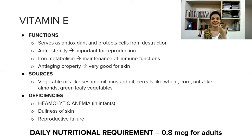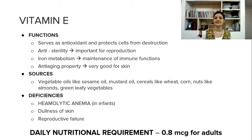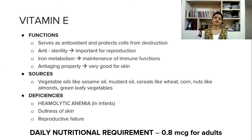Sources of vitamin E: mainly vegetable oils like sesame oil and mustard oil; cereals like wheat and corn; nuts like almonds; and green leafy vegetables. Deficiency causes hemolytic anemia — there is an abnormal breakdown of red blood cells, causing anemia. As it works on the skin, there is also dullness of skin. As it works on reproduction, failure in reproduction is also a deficiency symptom. The daily nutrition requirement is 0.8 micrograms for adults.